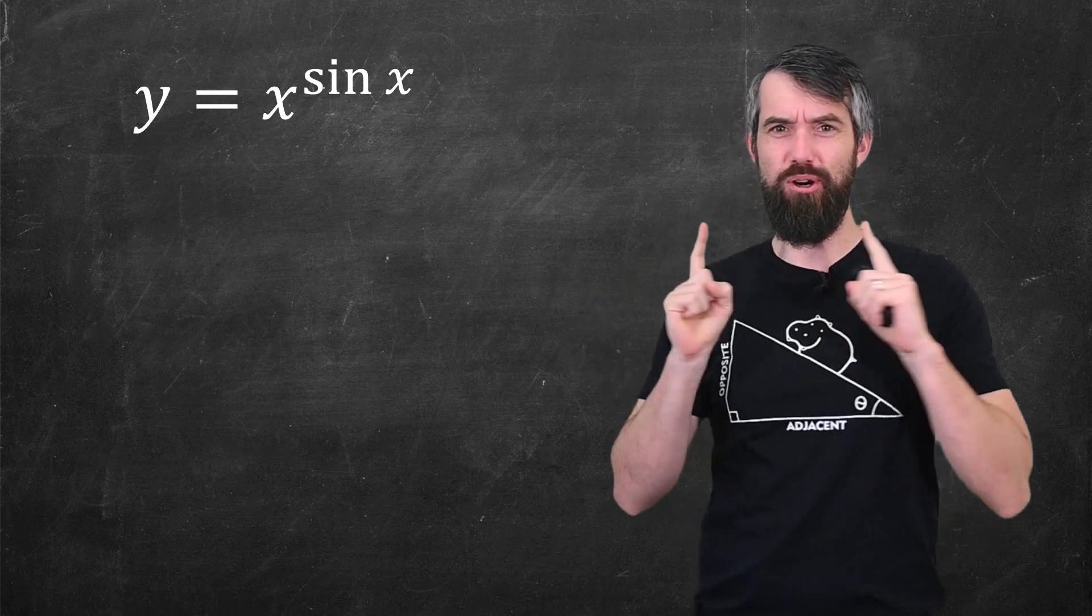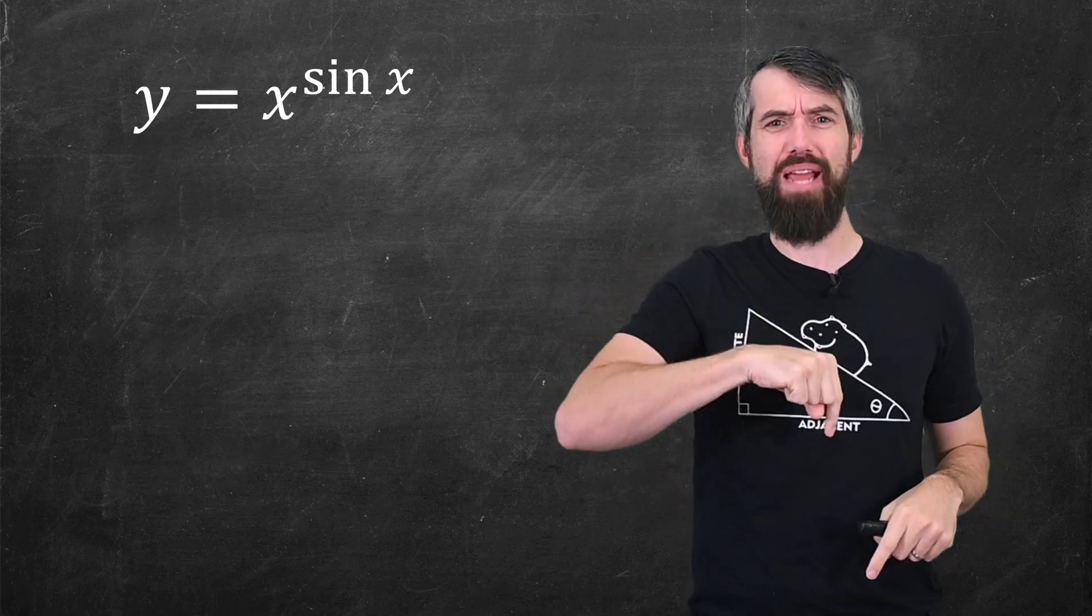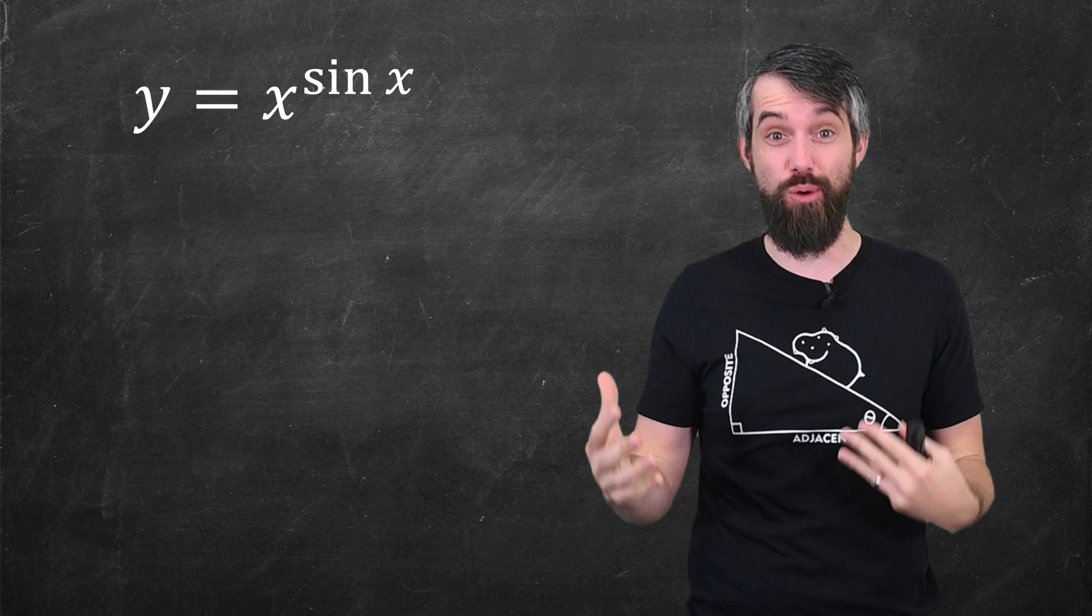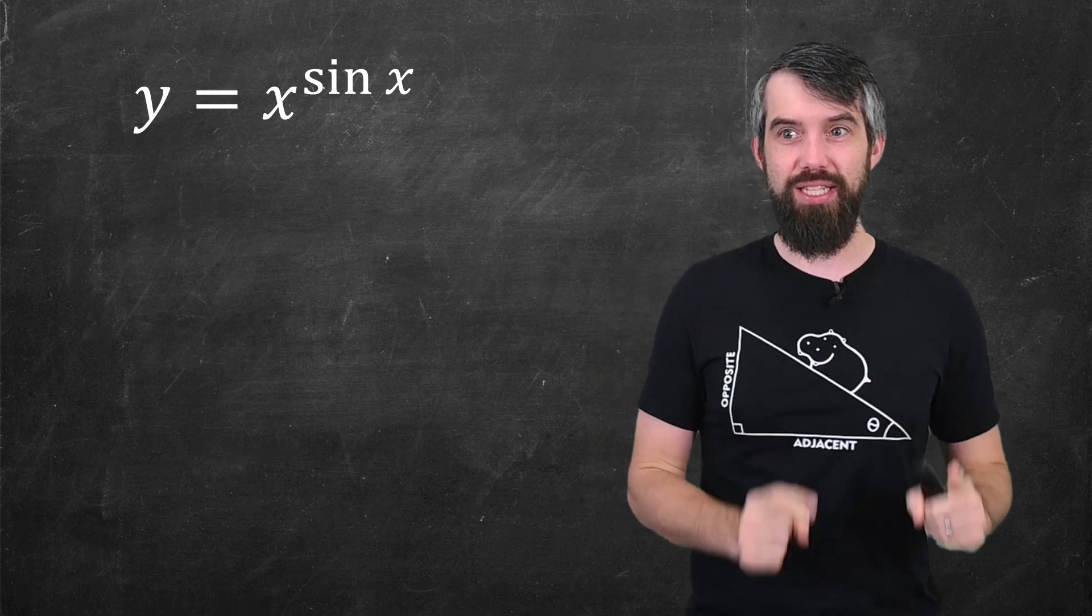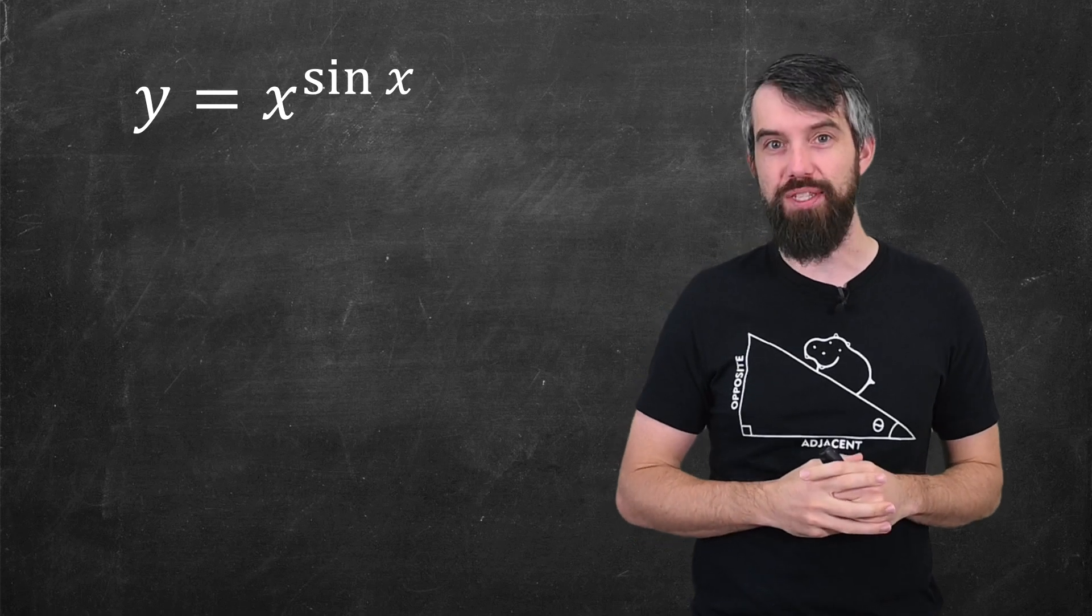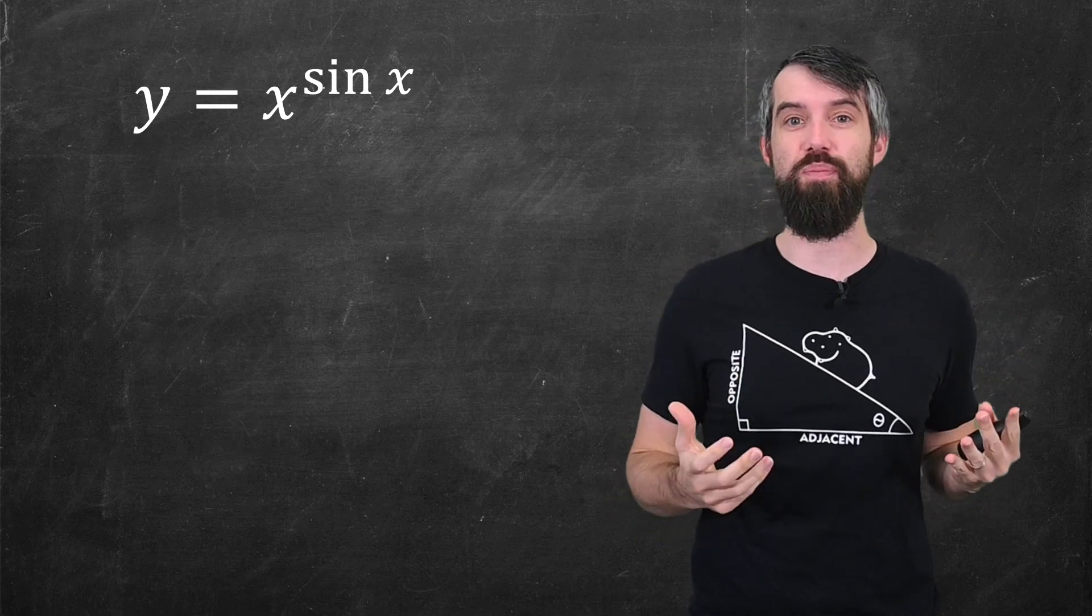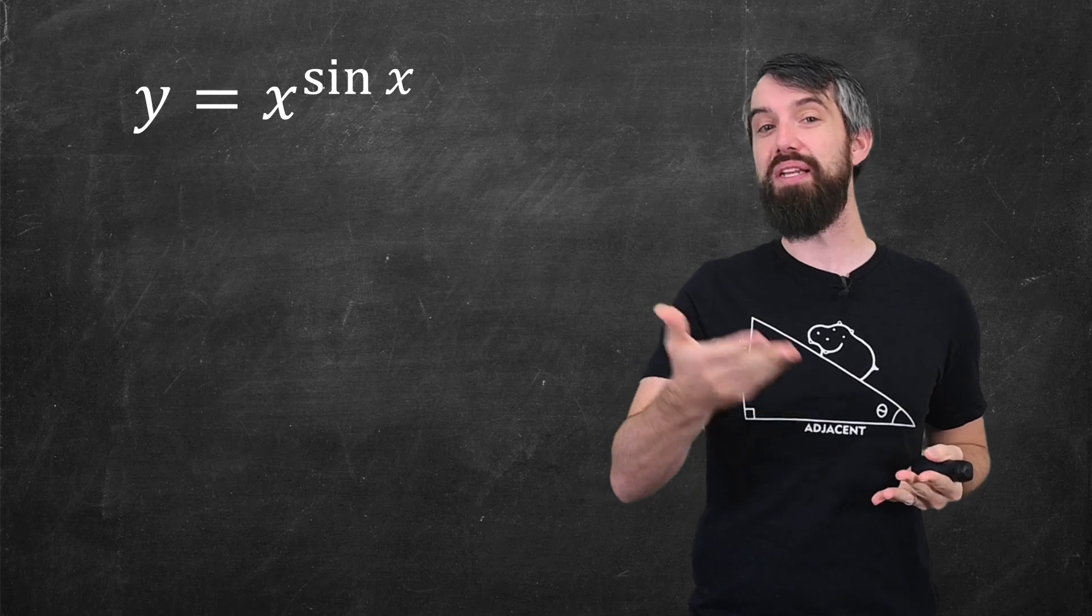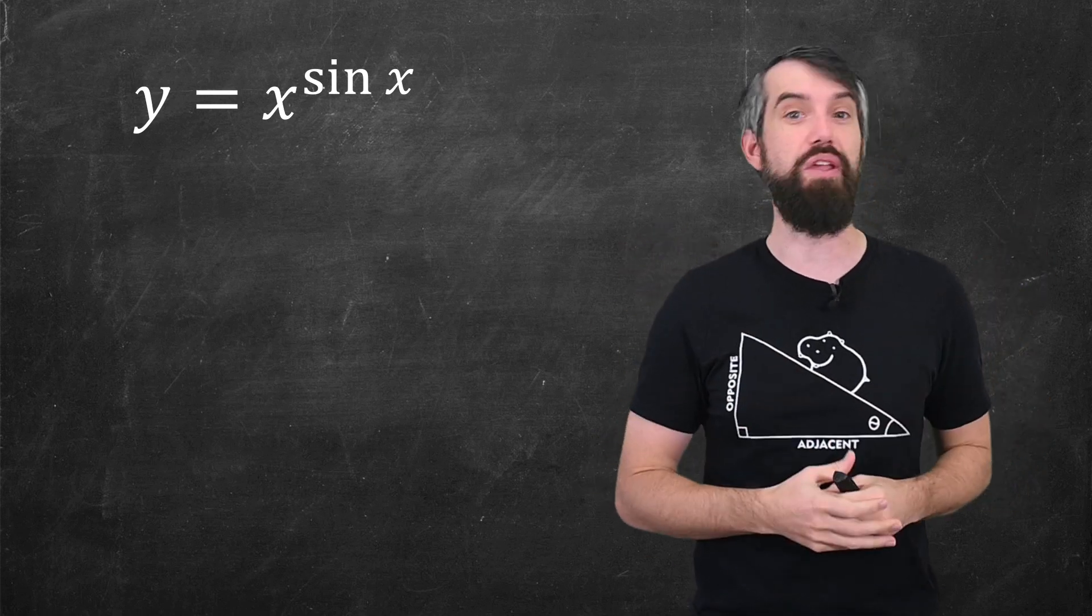I actually want to start with a simpler problem first, so skip down to the next timestamp if you want to see the hard one immediately. The question is, can you take the derivative of this function y = x^sin(x) when x is positive? This is a completely standard example of something called logarithmic differentiation, so let me just walk you through the process.